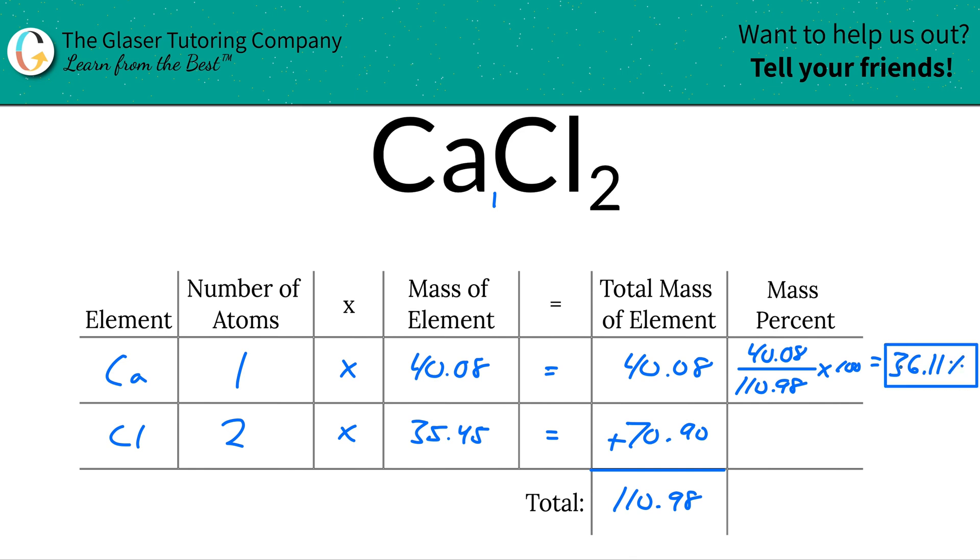Now, to find the percent for chlorine, you could take 100 and subtract this from it. But why don't we calculate it the better way? Because what happens if you screw this up? Well, if you screw that up, then this one will be screwed if you subtract it from 100.